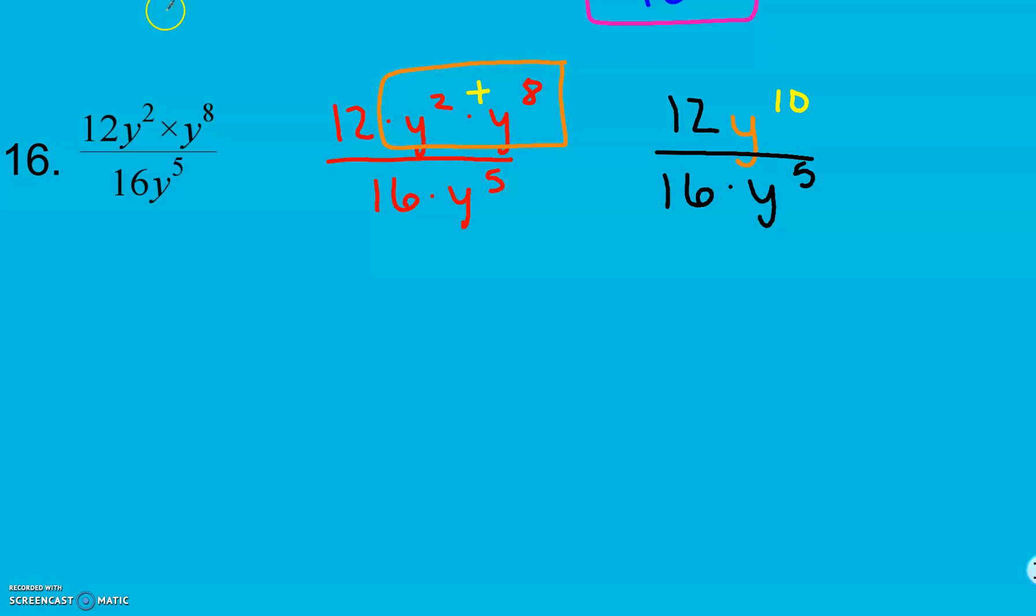Now, if I look here, everything's as simple in the numerator as I can get it and in the denominator. So, I can think about my fraction as two separate pieces. I can think about my coefficients and reduce them. The greatest common factor between 12 and 16 is 4. So, I'm going to go ahead and divide numerator and denominator by 4, and it's going to give me 3 over 4. Now, I can work with my y's. There's a y in my denominator and my numerator. So, I keep my base in my numerator. Subtract my exponents. 10 minus 5 gives me 5. So, I get 3y to the 5th power divided by 4.